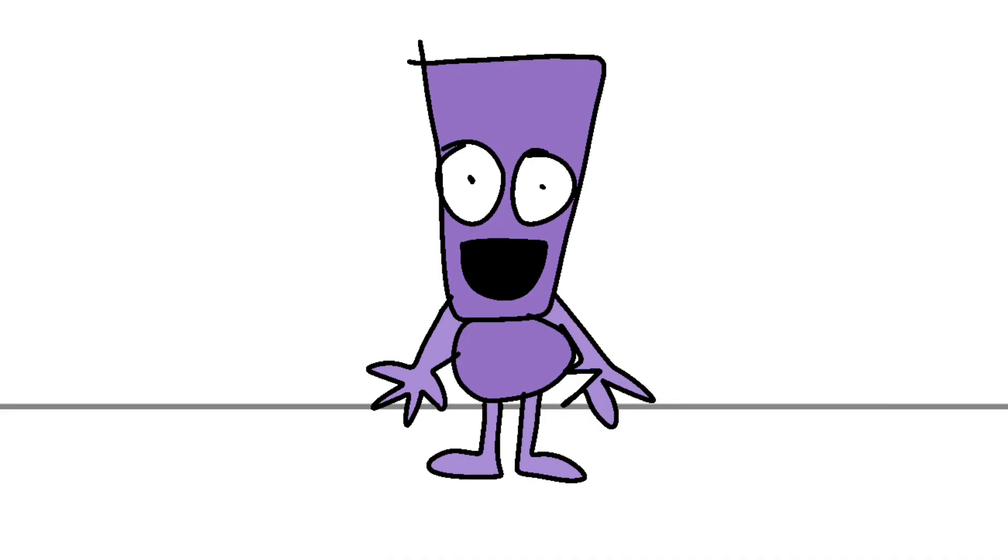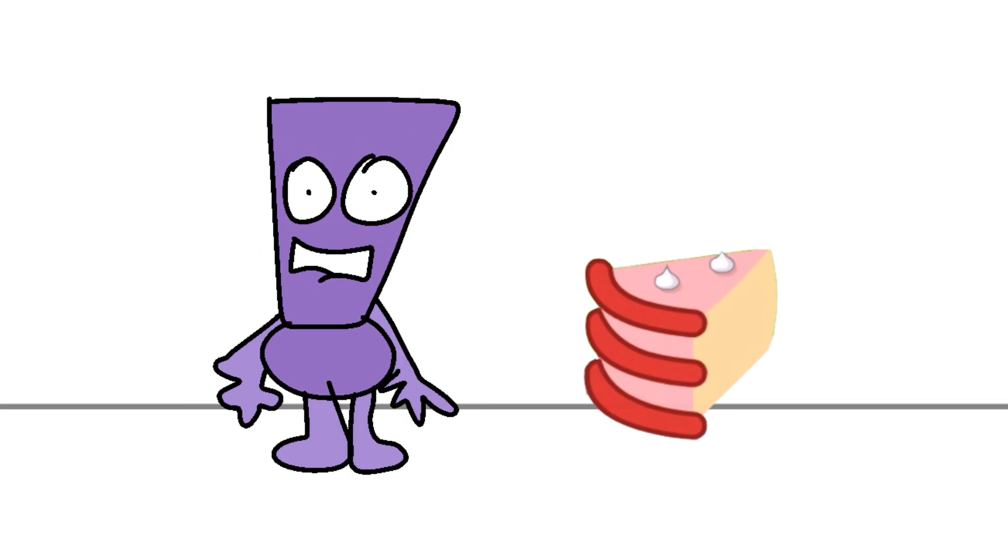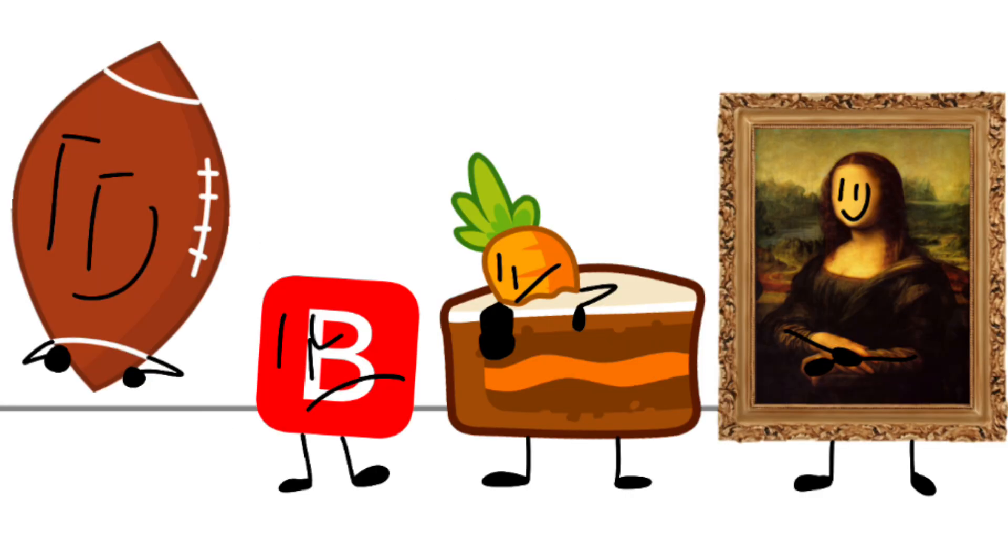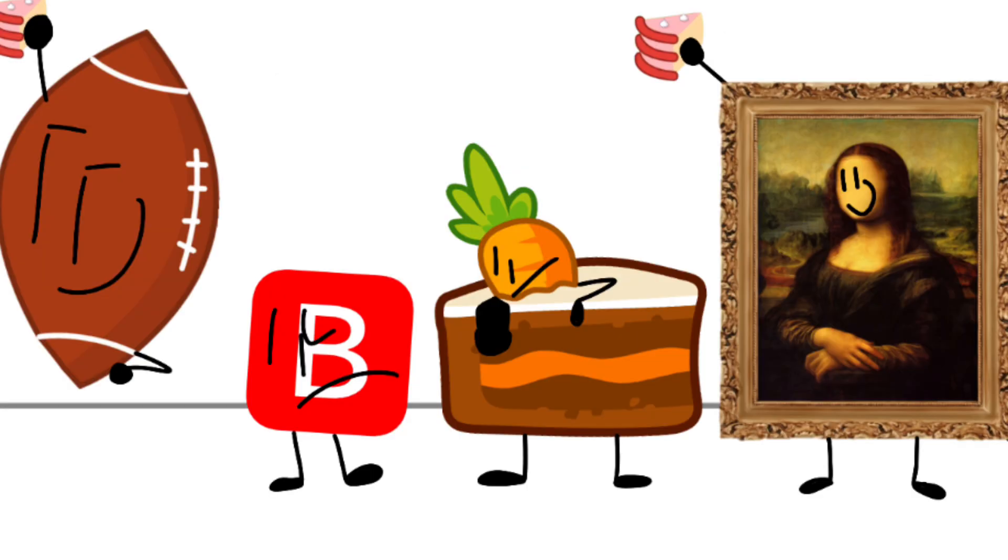Welcome to your first elimination. If you're safe you'll get cake. If you don't get a slice of cake, you'll be eliminated. The first two people safe are Football and Mona Lisa with five and two votes respectively. It's down to B Emoji and Carrot Cake.